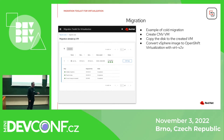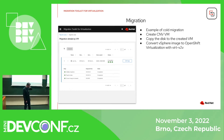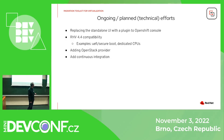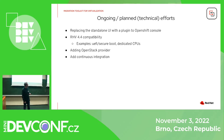For vSphere, there are some issues in that we need to use v2v to change the host. In the end, we have a running VM inside the OpenShift cluster which was previously running on oVirt. Our current plans are to replace our custom UI with the OpenShift plugin, add RHV 4.4 compatibility, and add OpenStack support, which I mentioned at the beginning.